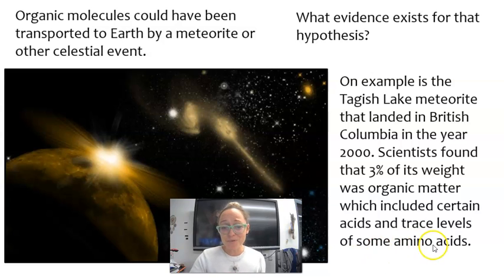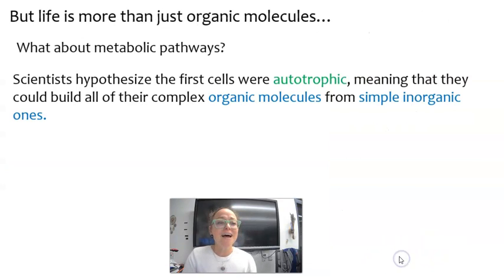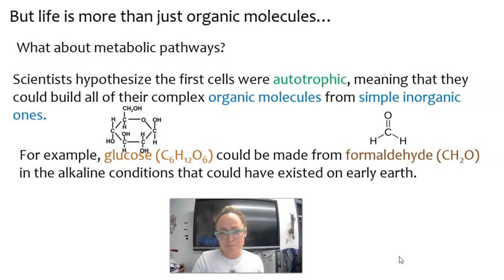But life is more than just organic molecules. When we talk about metabolic pathways, for example, scientists hypothesized the first cells on Earth were actually autotrophic, meaning that they can build all their complex organic molecules from simpler ones. For example, glucose can actually be made from formaldehyde, so these cells could have taken the formaldehyde in the environment and then converted it into glucose.